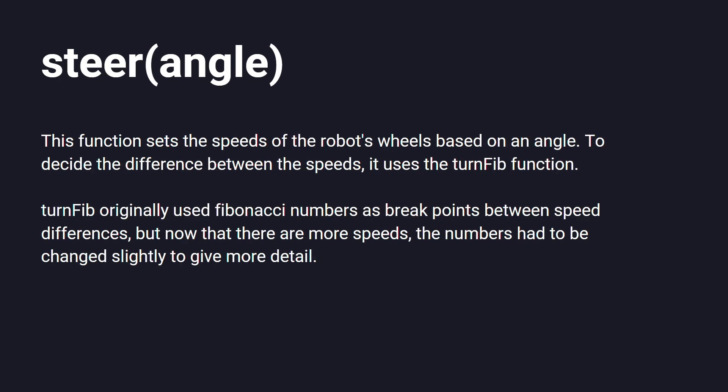The third general function, Steer, helps the robot go in a certain direction and at a certain angle. This function also uses Fibonacci numbers to set the robot's wheel speed.